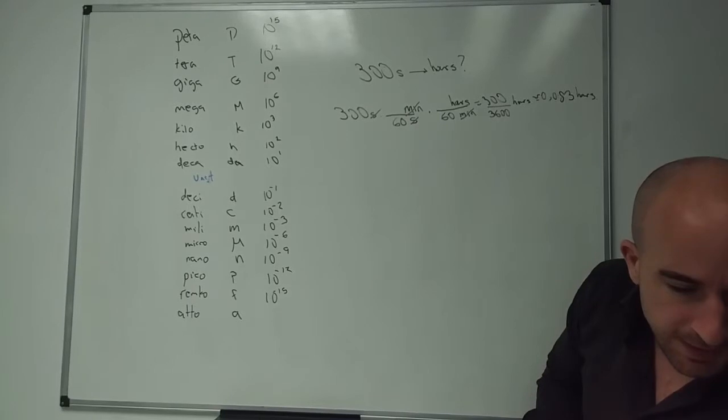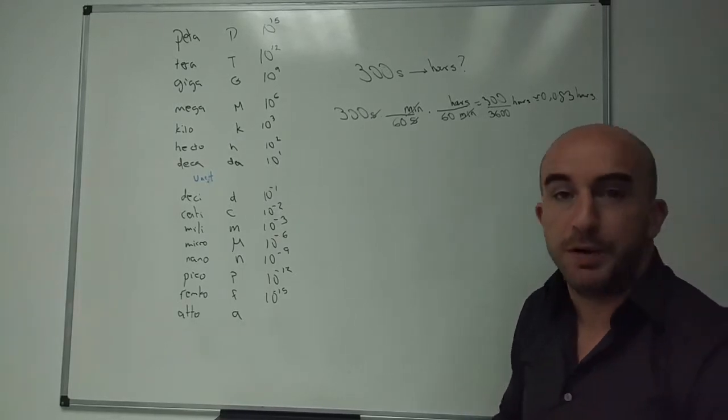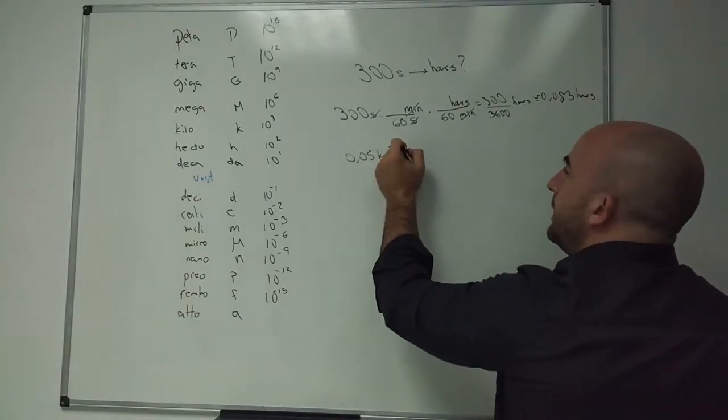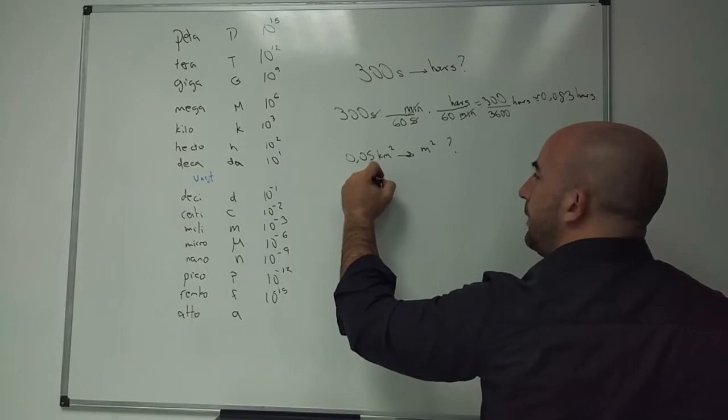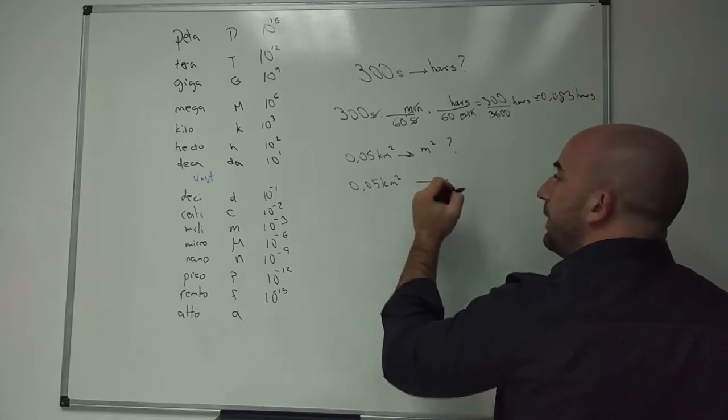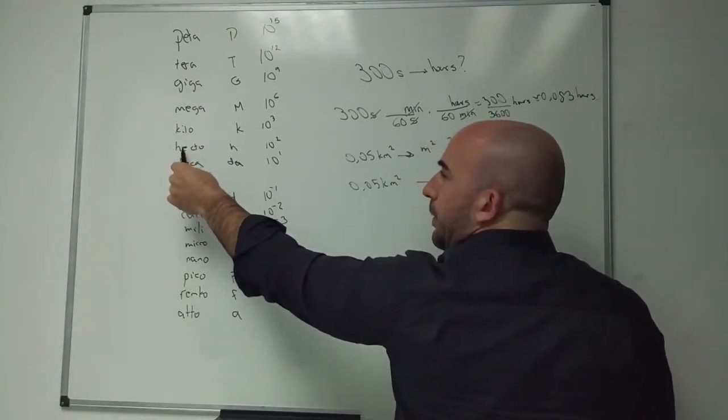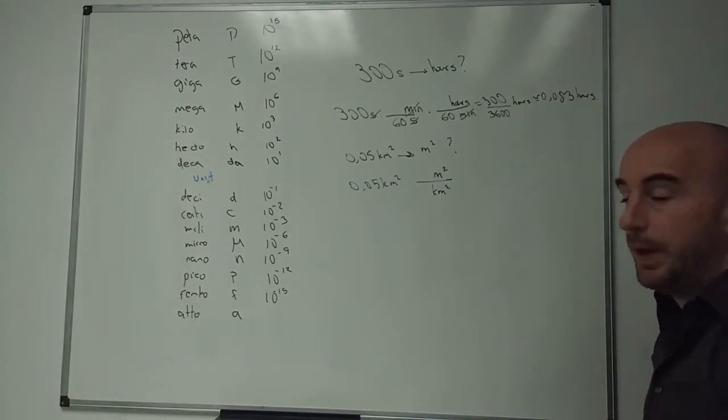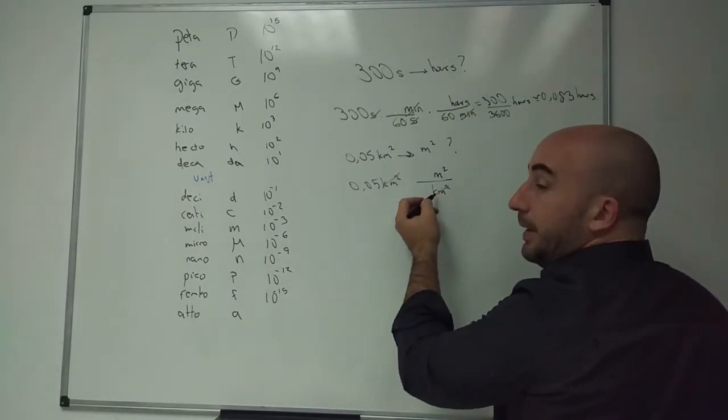So we'll do another easy example. How many meters squared is 0.05 kilometers squared? So I get the magnitude I have originally, and I want to put first the units, so I have to take away kilometers squared. And the next step would be, I could do from kilometers to hecto, from hecto to deca, from deca to unit, or I could do it all the way. So I'm going to do it in this case, all the way. So that way I know my units will stay away.